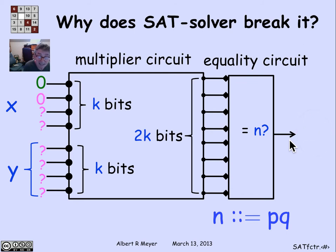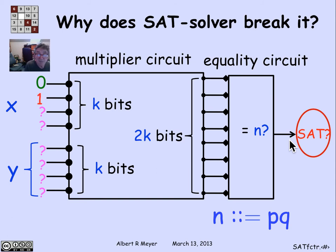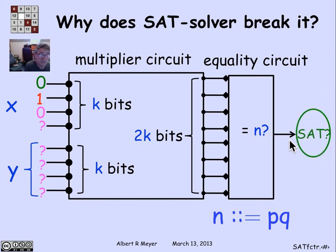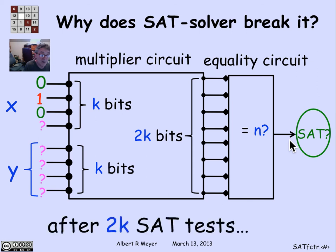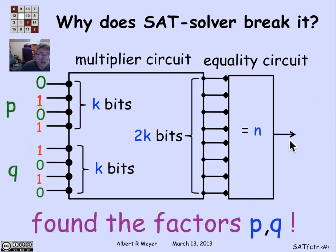Now we try to set the second input bit to 0 and see what happens. We ask the SAT tester: is it possible to fill in the remaining digits to get two numbers x and y that multiply to produce n and output 1? The SAT tester says no — this is an unsatisfiable circuit. You can't get a 1 out of it anymore. That tells me I have to set the second bit to 1 in order to have a factor of n where x and y multiply together to be n. Then we go to the third bit, ask whether 0 works, the SAT tester says yes, so we fix 0. We now know the first three bits of x.